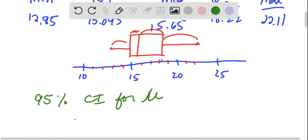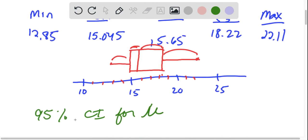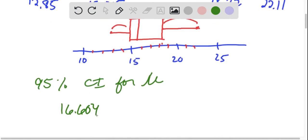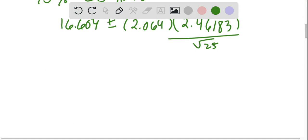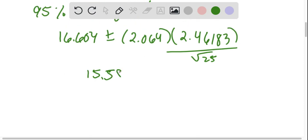And that would be to take our x̄, which is that 16.604 plus or minus the t value, that is for 24 degrees of freedom, which is 2.064 times the sample standard deviation, which is 2.46183 divided by the square root of 25. And I'm actually going to use my software to find that. That is a t interval, and I have that data in there, and we're doing a 0.95.